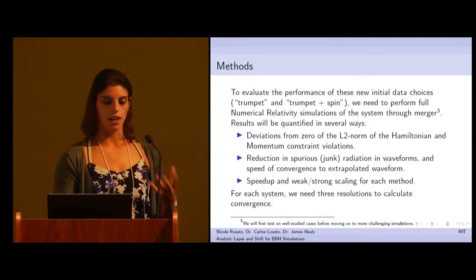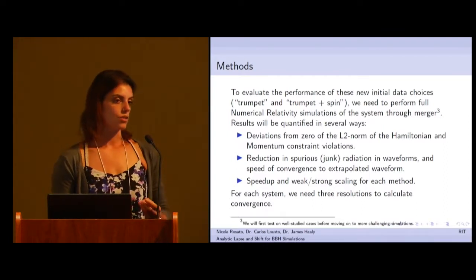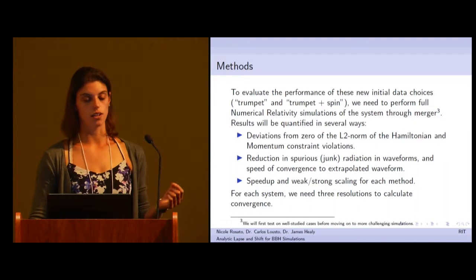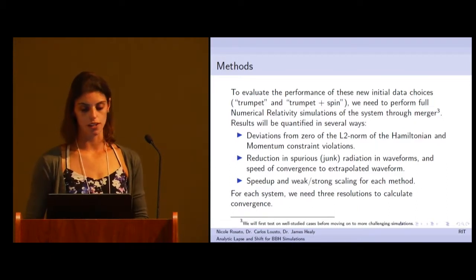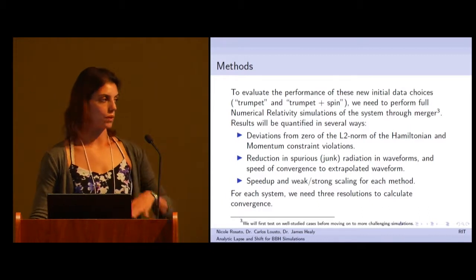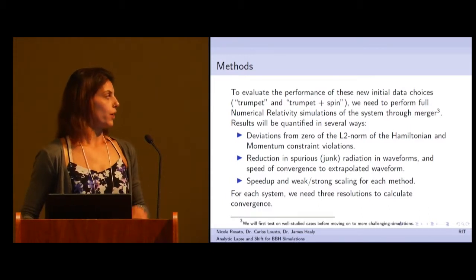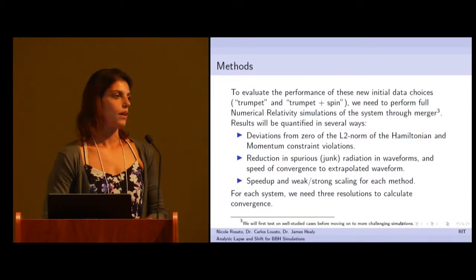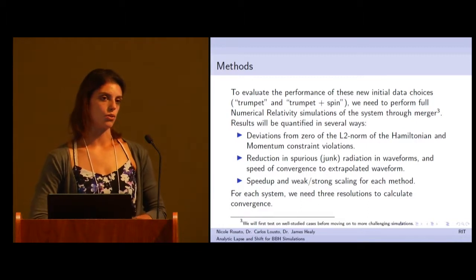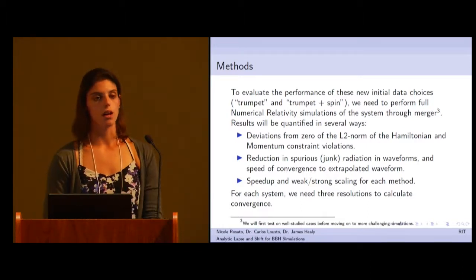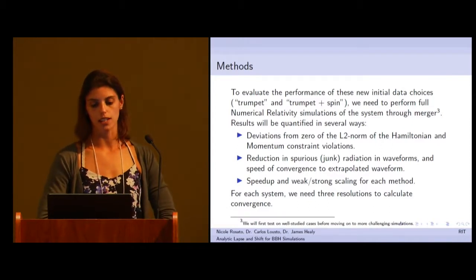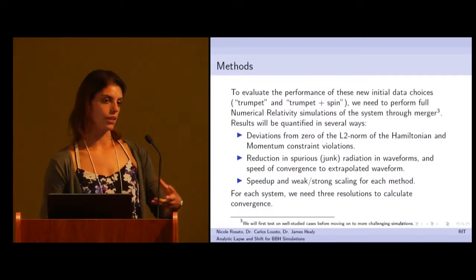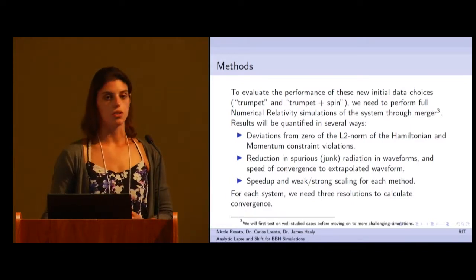To evaluate the performance of these initial data, we'll quantify our results in a few ways. We're going to look at deviations from zero of the L2 norm of the Hamiltonian and momentum constraint violations. We want these to be zero and we'll see how far off they are. We're going to hope to see reductions in junk radiation in the beginning of waveforms and also more quick convergence to an extrapolated waveform to infinity. We'll also, if the data is available, look at speed up and weak and strong scaling for each method. For each set of initial data, we'll run three resolutions to calculate convergence.